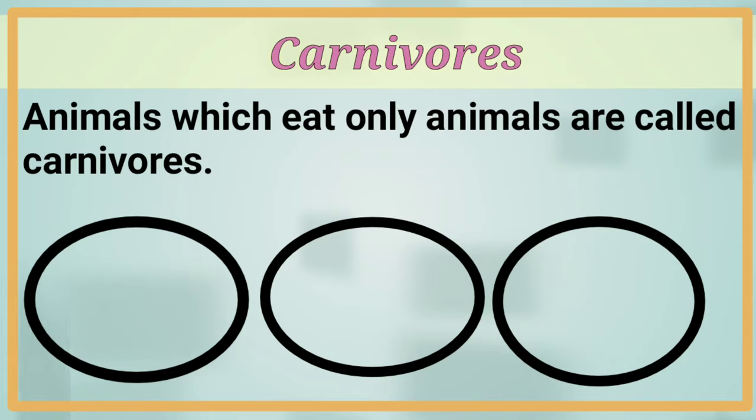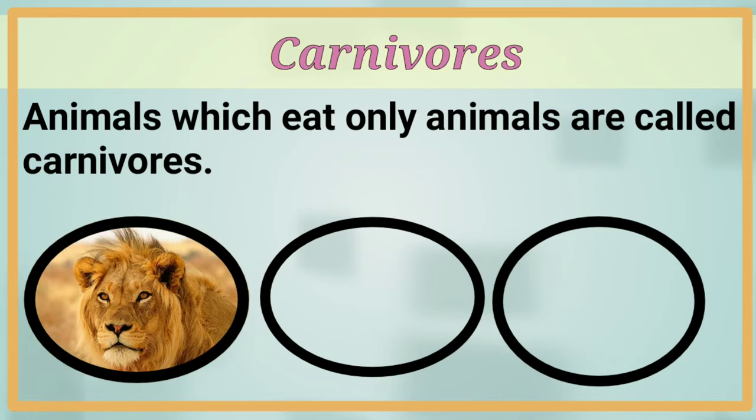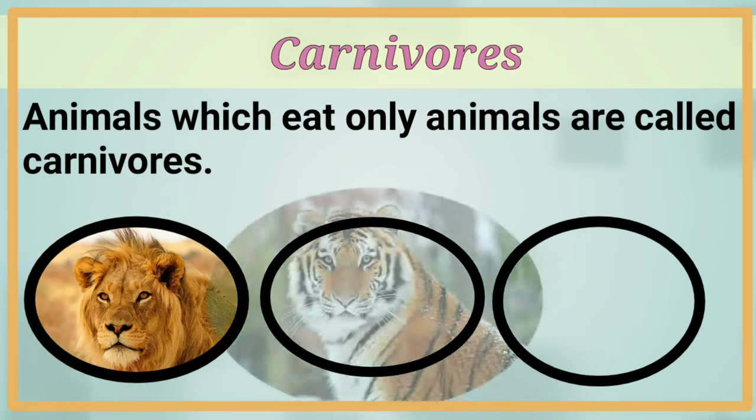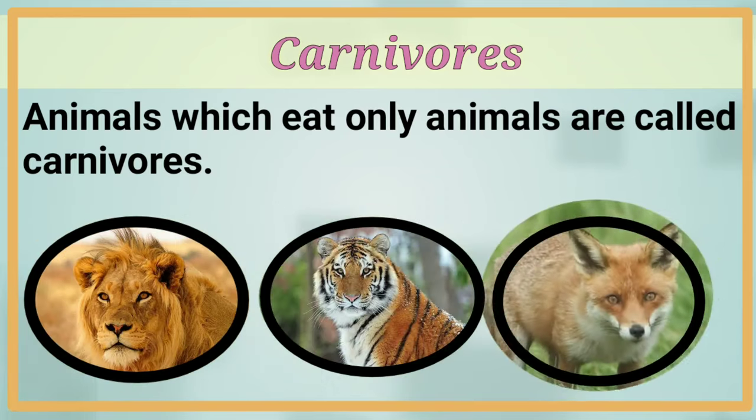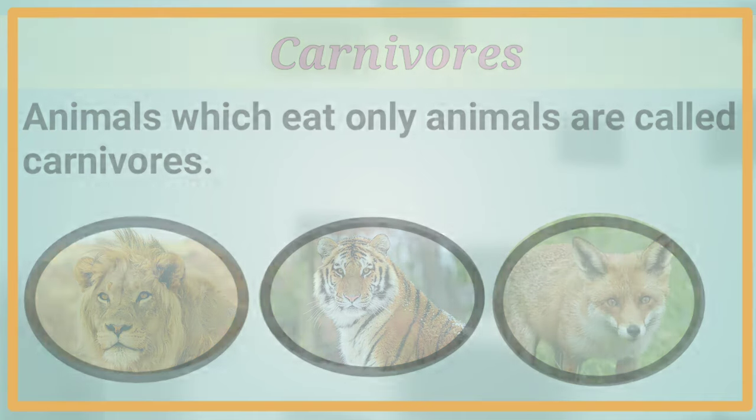We can give examples for carnivorous: lion, tiger, fox, etc. The third category is omnivorous. We include human beings in this category. Then what would be the speciality of the food habits of the animals in this category?